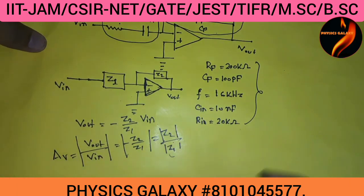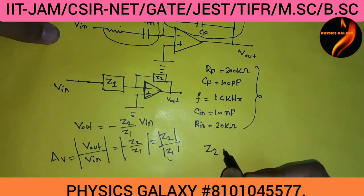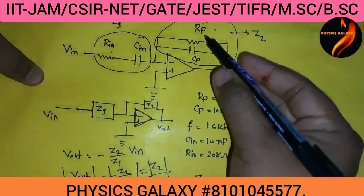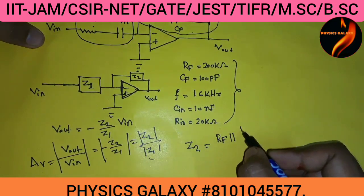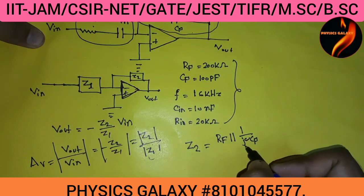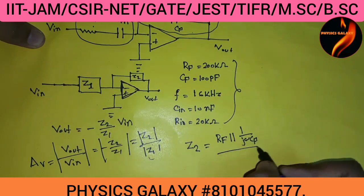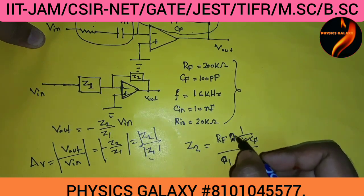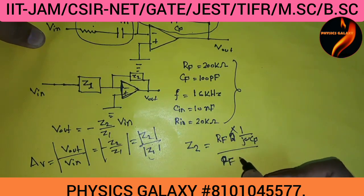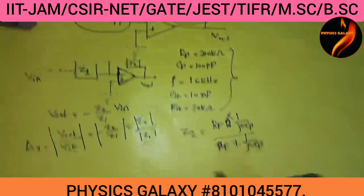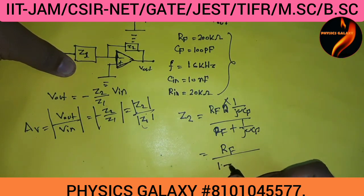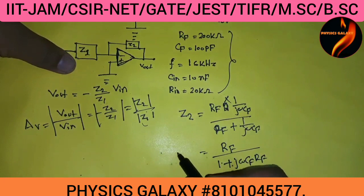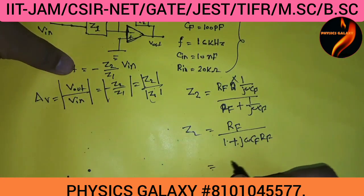Z2 in this circuit is the parallel combination of RF and CF. This will be the parallel combination of RF and the impedance of the capacitor, which is 1 over j·ω·C. Simplifying the parallel combination gives RF divided by (1 plus j·ω·C·RF).